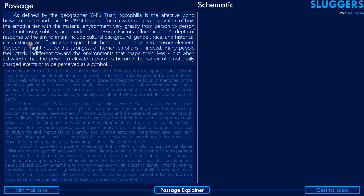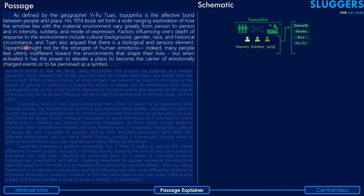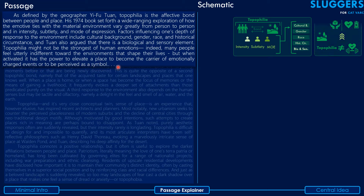The first paragraph reads: As defined by the geographer Yi-Fu Tuan, topophilia is the affective bond between people and place. His 1974 book set forth a wide-ranging exploration of how emotive ties with the material environment vary greatly from person to person in intensity, subtlety, and mode of expression. Factors influencing one's depth of response include cultural background, gender, race, and historical circumstance. Tuan also argued there is a biological and sensory element. Topophilia may not be the strongest of human emotions, but when activated, it has the power to elevate a place to become the carrier of emotionally charged events or to be perceived as a symbol.